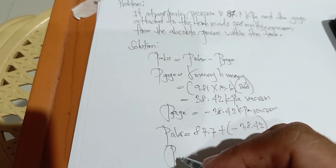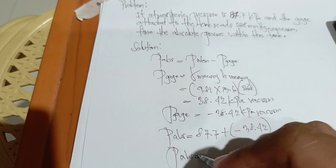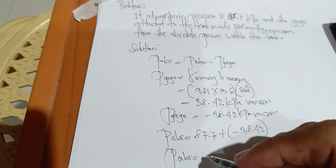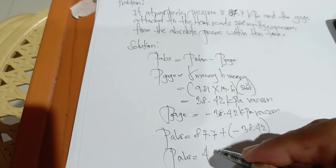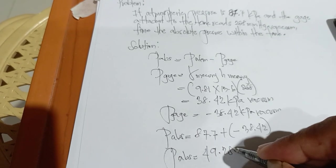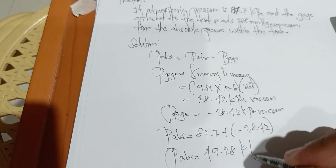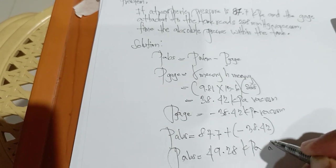Pressure of absolute is equals 49.28 kilopascal absolute.